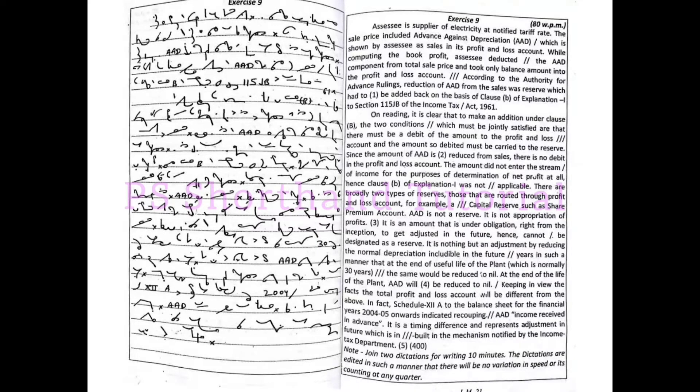SSE is the supplier of electricity at Notified Tariff Rate. The sale price included advance against depreciation, which is shown by SSE as sales in its profit and loss account. While computing the book profit, SSE deducted the AAD component from total sale price.